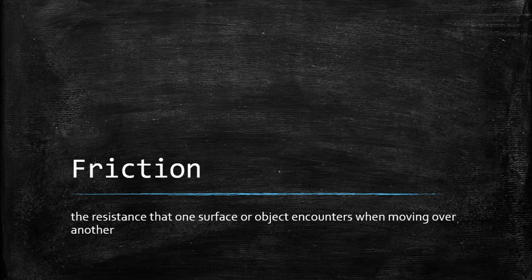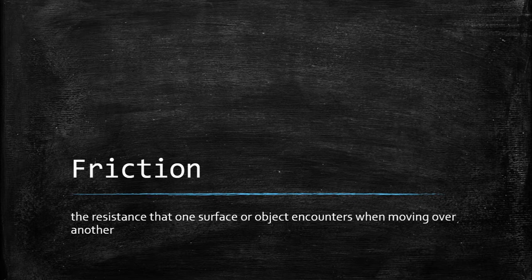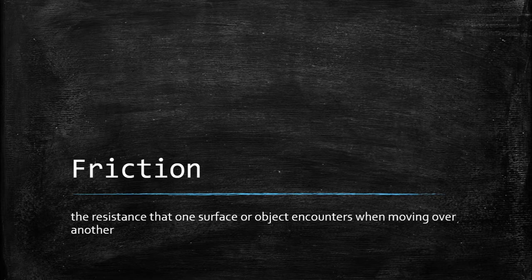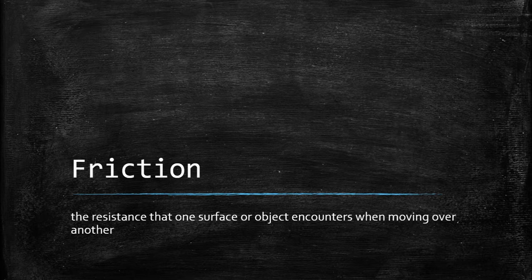So another session is about friction. Friction is actually a type of force — a resistance force that one surface or object encounters when moving over another. The resistance between the two surfaces is called friction.